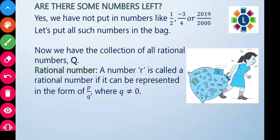Rational numbers are represented by capital Q. A rational number can be written in the form P by Q, where Q is not equal to zero. This is the standard definition of rational numbers that we revise in class.